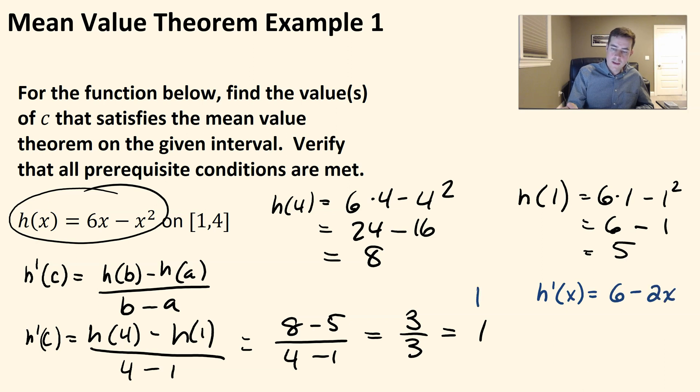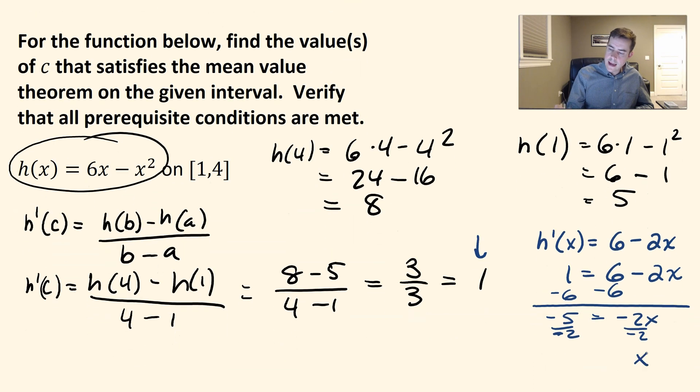I need to know where that's equal to 1. So we can go ahead and put that in here and solve this. I can just subtract 6 from both sides. So this would be -5 equals -2x, and simply divide by -2. We get that x is going to equal 5/2.